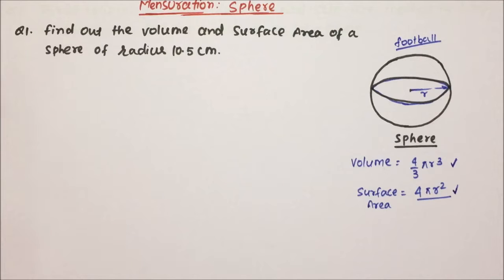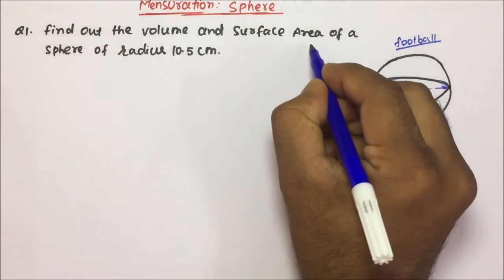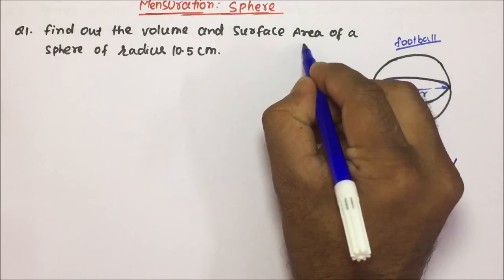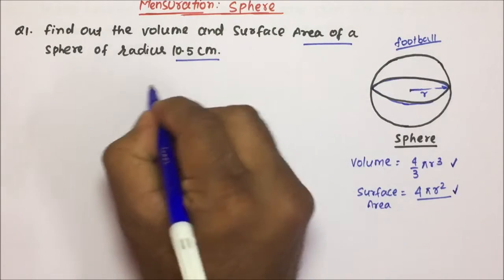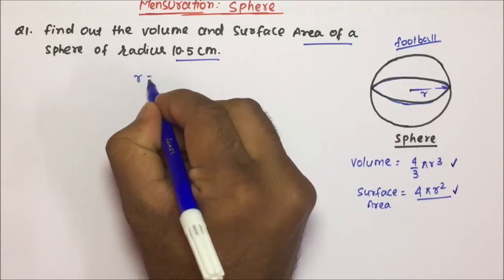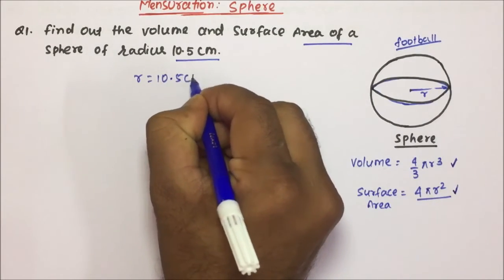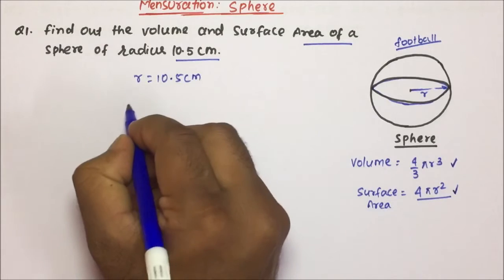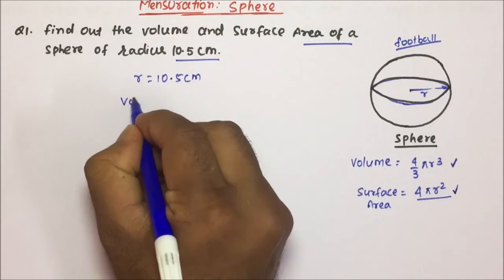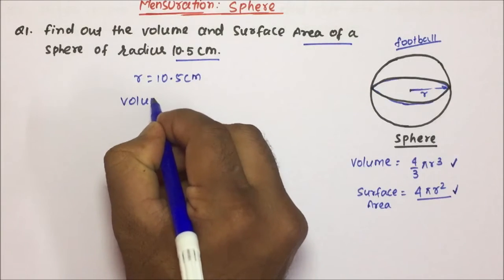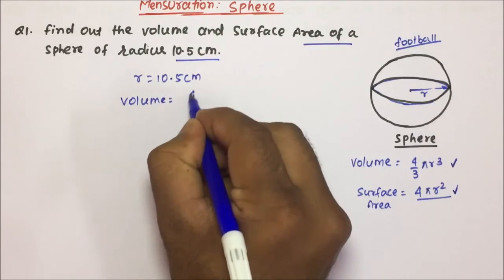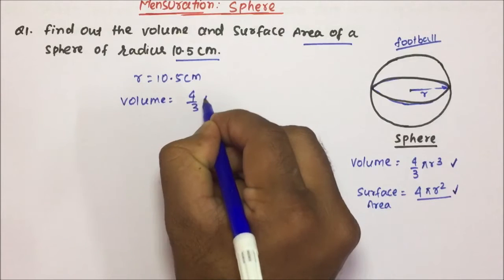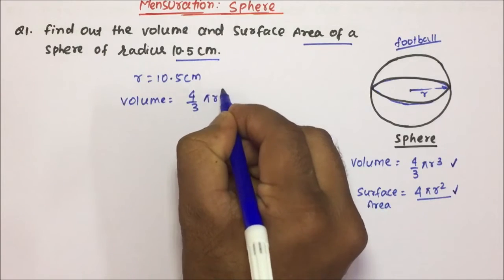Now friends, we have to find out the volume and the surface area of a Sphere of radius 10.5 centimeter. So friends, radius is nothing but 10.5 centimeter. Let us calculate the volume first. So volume will be 4 by 3 pi r cube.